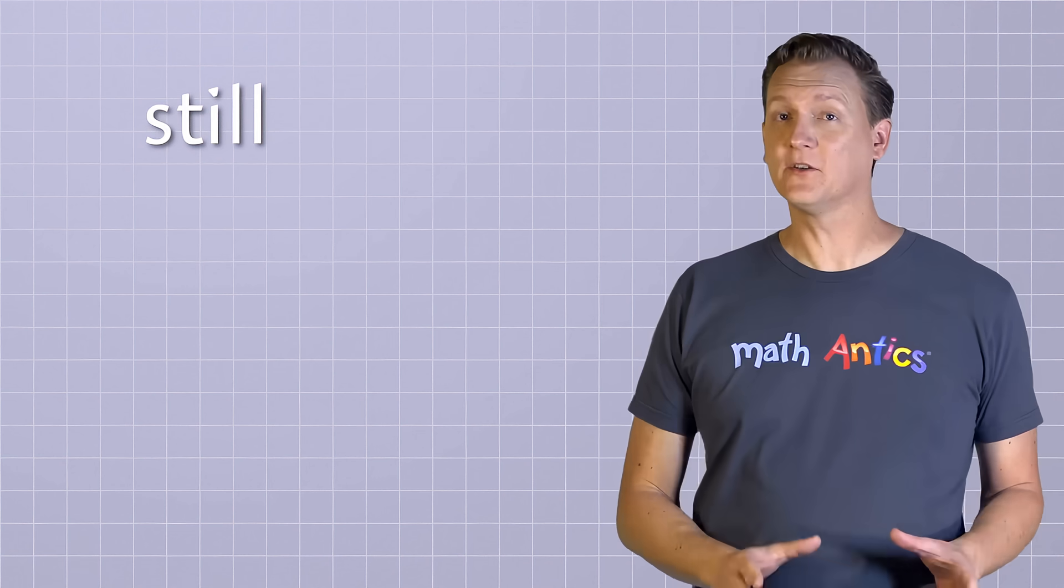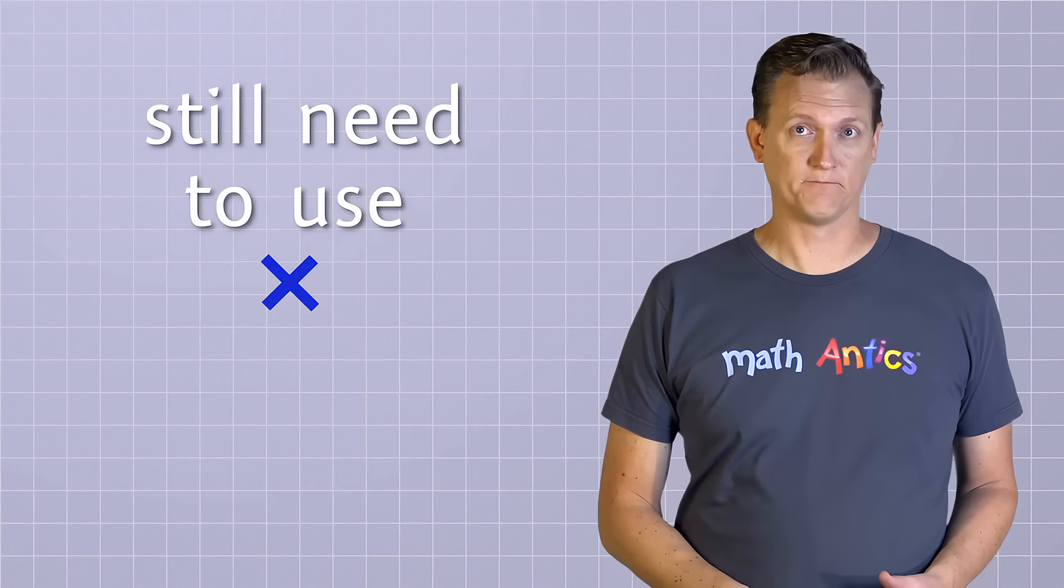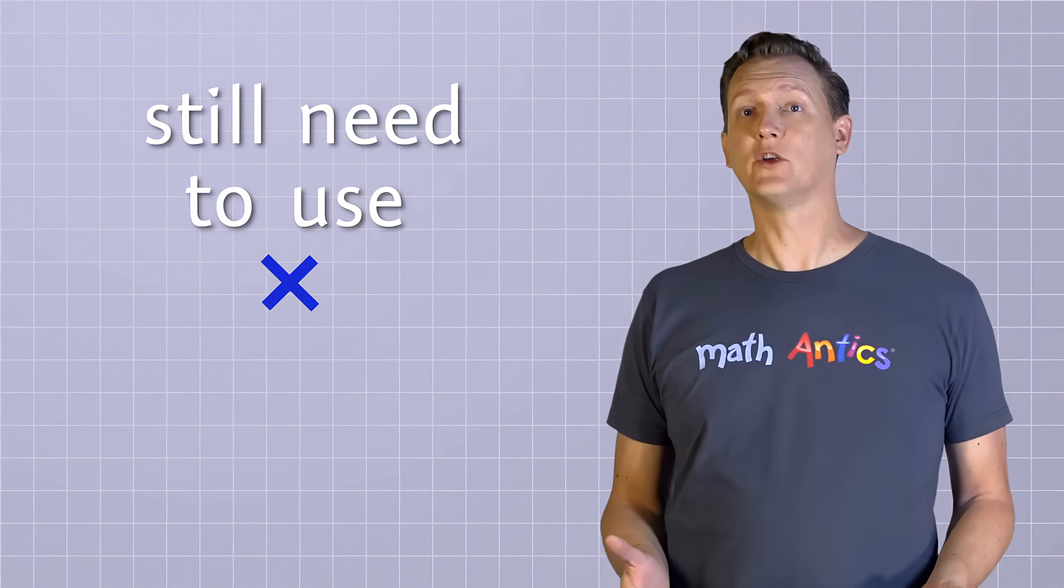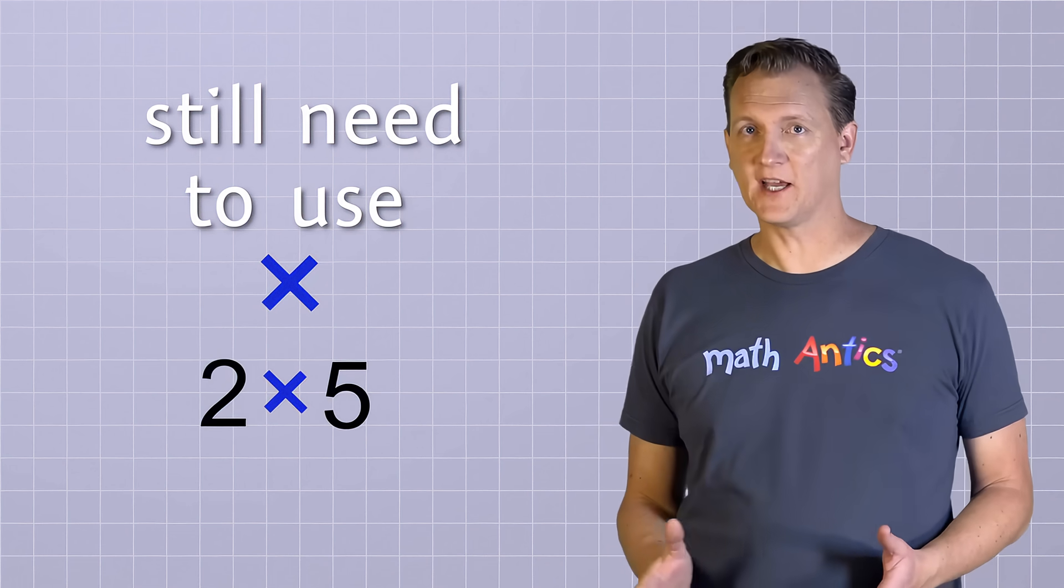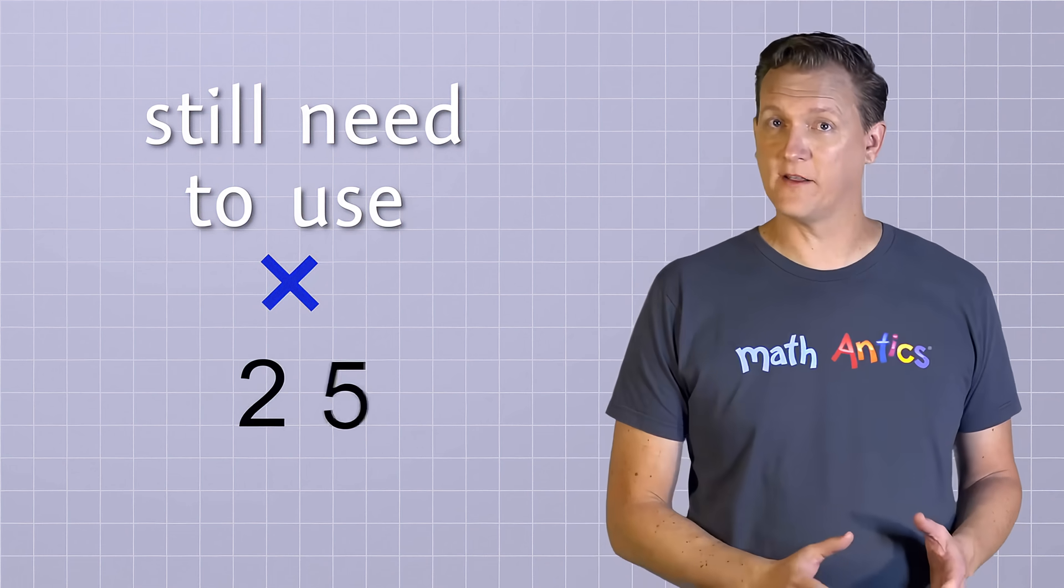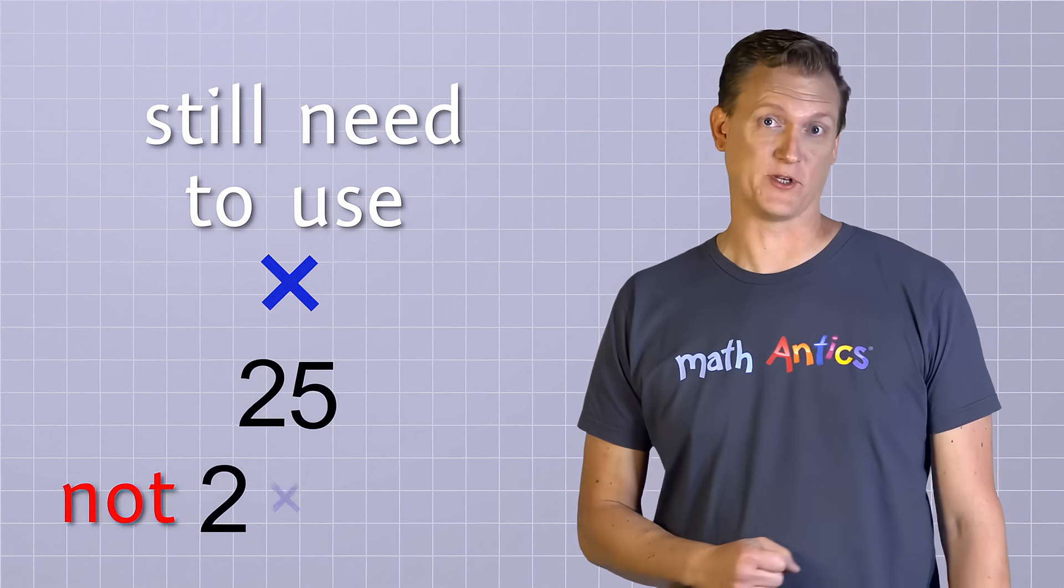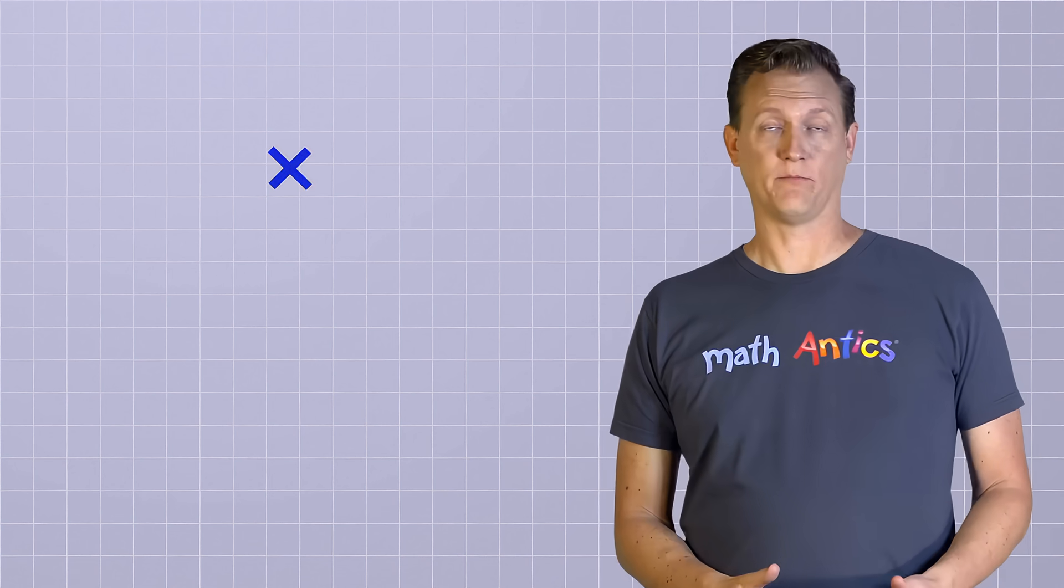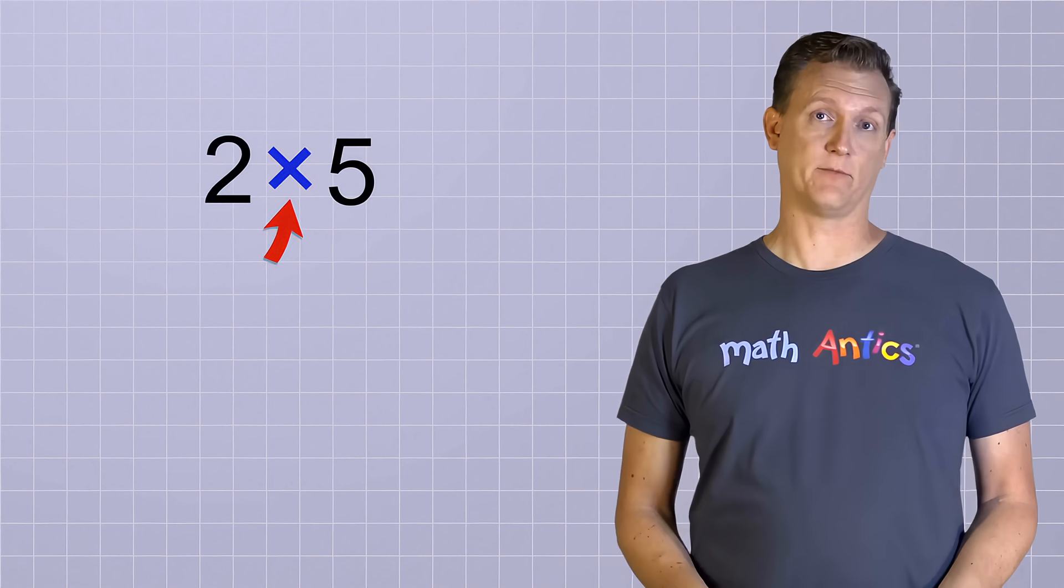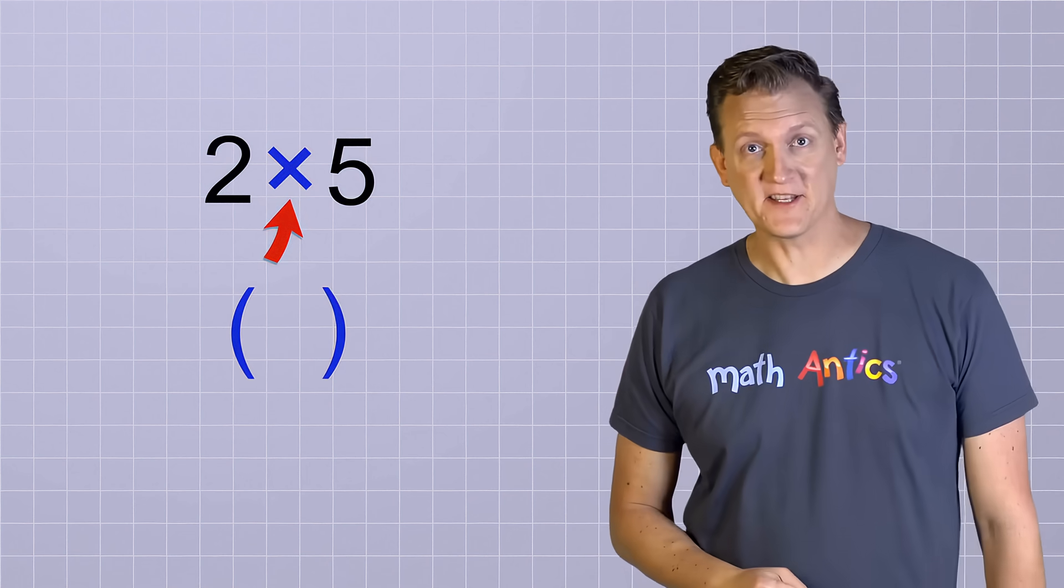Finally, some good news! Now I never have to write down that pesky multiplication symbol again! Oh yeah! Ah, not so fast. There are some cases in algebra where you still need to use a multiplication symbol. For example, what if you want to show 2 times 5? If you just get rid of the times symbol and put the 2 right next to the 5, it's going to look like the two-digit number 25, which is not the same as 2 times 5. So whenever you need to show multiplication between two known numbers, you still have to use the times symbol... unless you use parentheses instead.